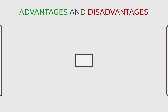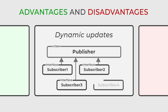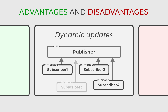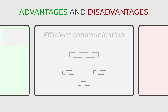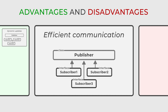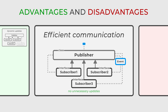Starting with the benefits, one of the main advantages of the Observer pattern is its support for dynamic updates. At runtime, objects can be dynamically added or removed from the list of observers, providing great flexibility in managing dependencies between objects. In addition to this, the pattern ensures efficient communication between objects. Observers are only notified when relevant changes in the subject's state occur, preventing unnecessary updates and helping keep the system efficient.